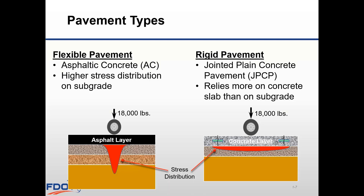Due to the flexibility of asphalt, a higher stress distribution is produced on the subgrade, so we need to use high quality materials near the surface due to the higher stresses. Concrete pavement has high rigidity and a high modulus of elasticity, so it relies more on the concrete slab than the subgrade for structural support — the concrete spreads the load over a large area and keeps pressures on the subgrade low. These different stress distributions are the primary reason flexible and rigid pavements require different design procedures.